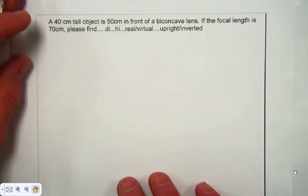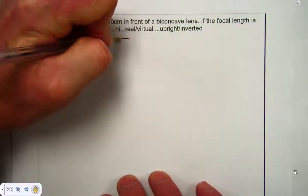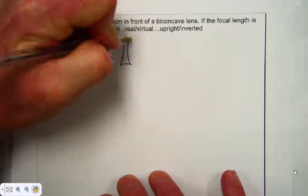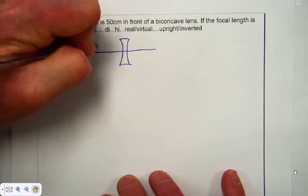Okay, in this problem, as you can see, we have a biconcave lens, so I'm going to draw a biconcave lens like so. And the object, I can just pick a side, it's not specified, there it is.